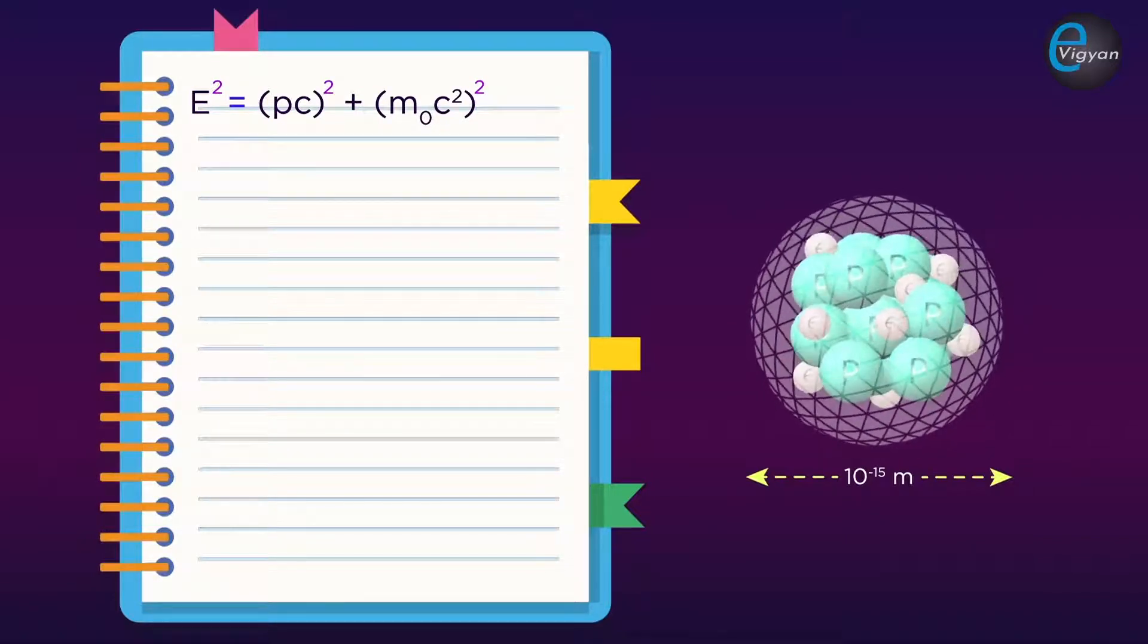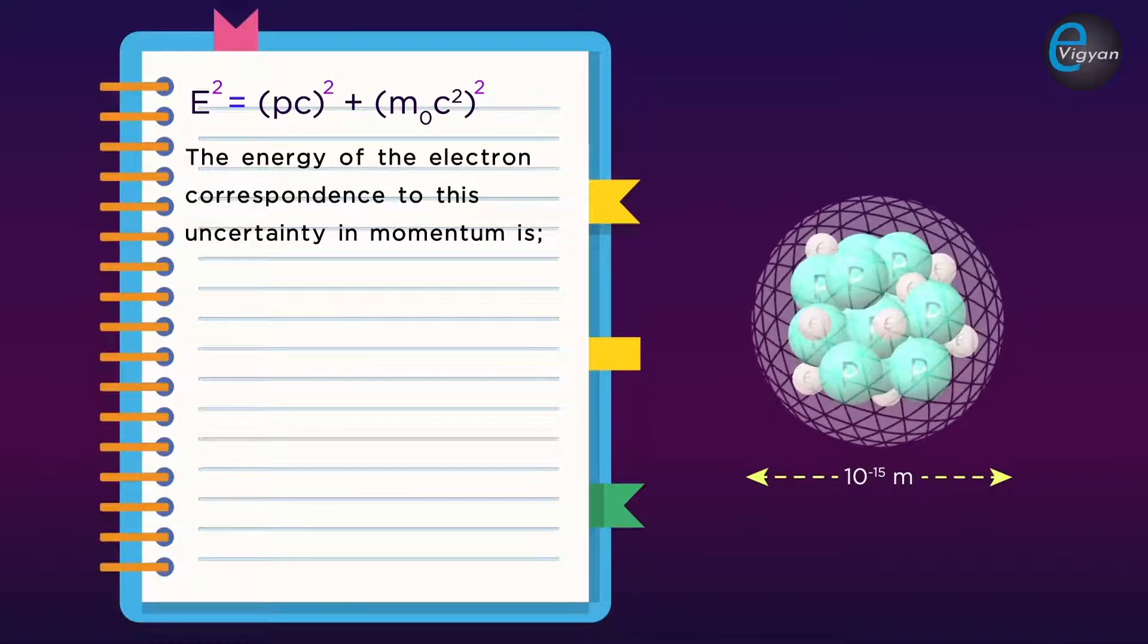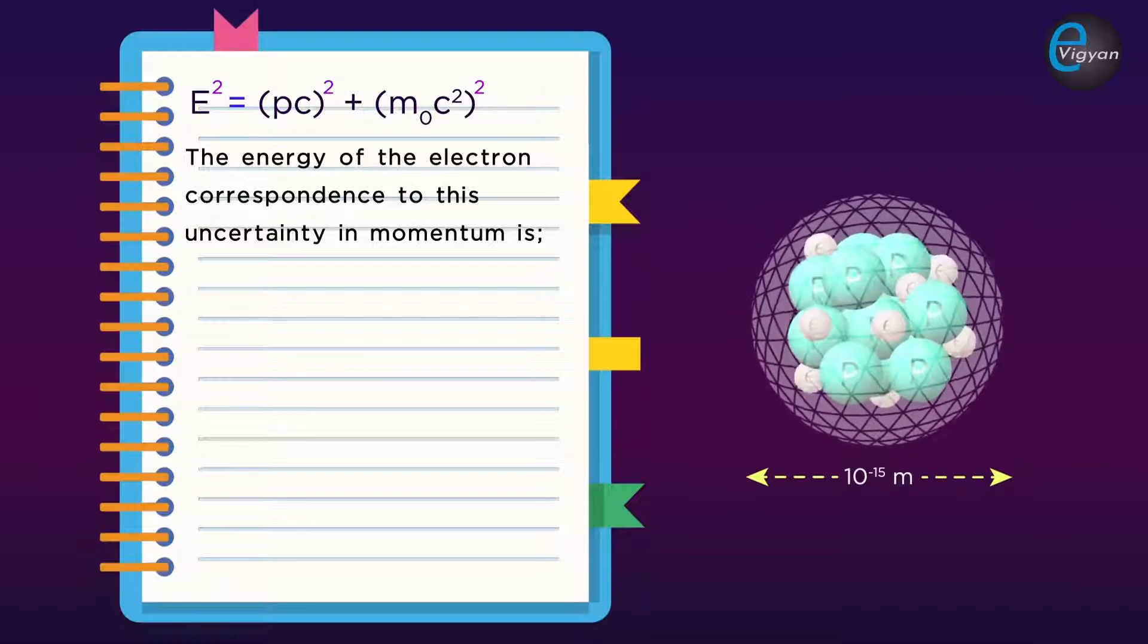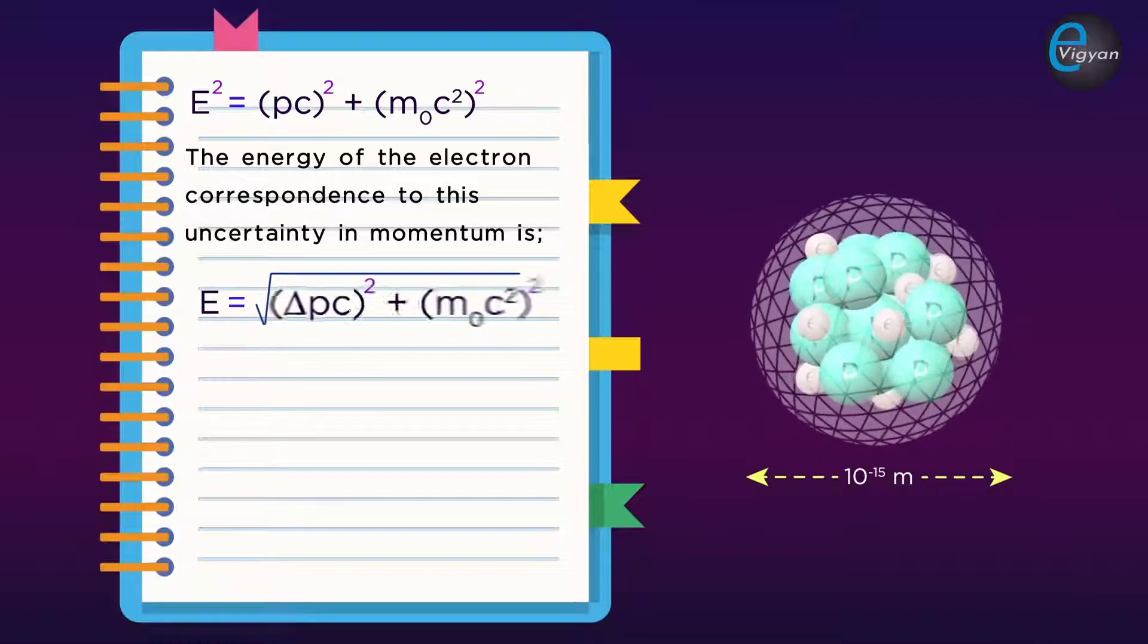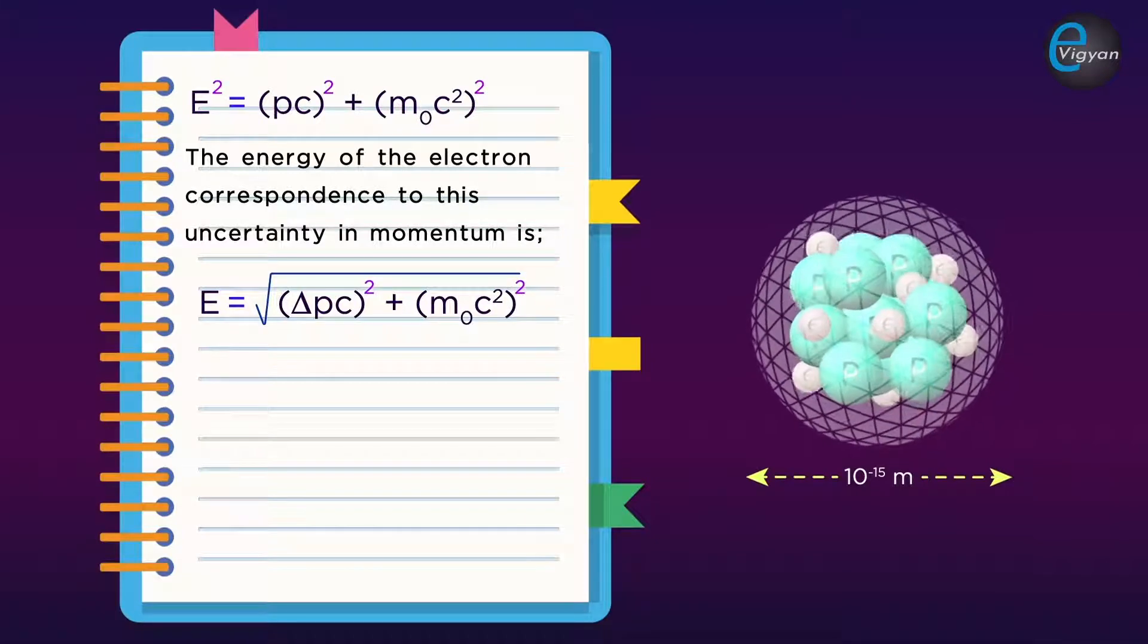From the formula E² = (pc)² + (m₀c²)², the energy of the electron corresponding to this uncertainty in momentum is E equal to √[(Δpc)² + (m₀c²)²].